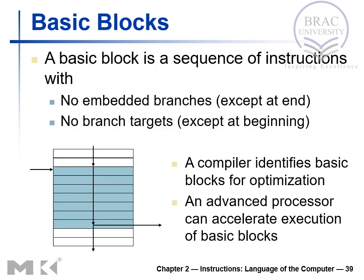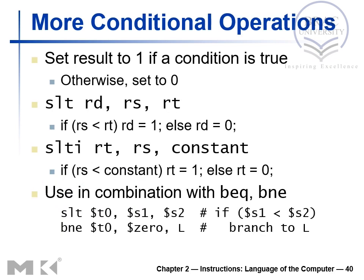A basic block is a sequence of instructions with no embedded branches except at the end, and no branch targets except at the beginning. The rest is sequential code: once one instruction executes, the next follows in order. This sequential basic block structure can be used to accelerate program execution and enable faster execution of the program.